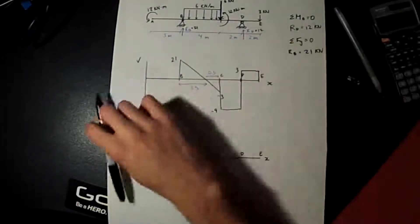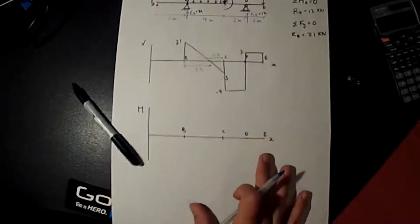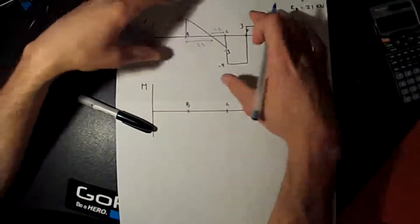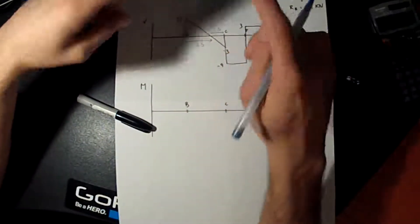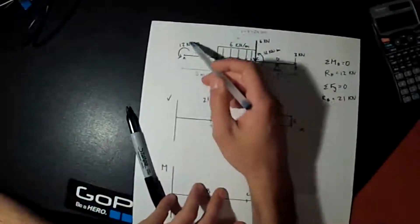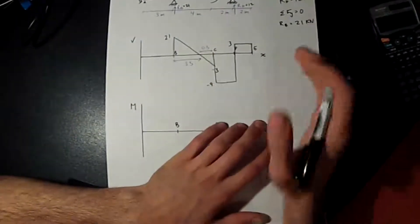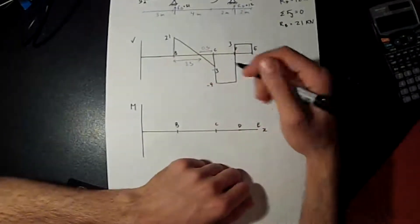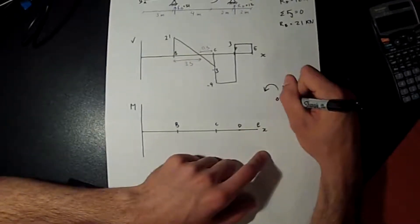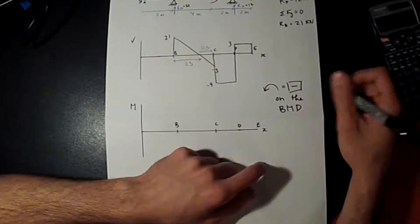We've basically finished our shear force diagram and now we're going to do the bending moment diagram. To do the bending moment diagram, essentially it's an integral of the shear force diagram, but there are constants that change things up — those are the external moments. An external moment that's positive with the right-hand rule is negative on the bending moment diagram.